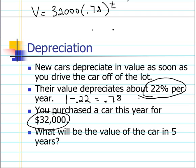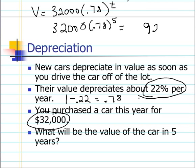If we put 5 in for t and calculate, we get 32,000 times 0.78 to the fifth power, which comes out to $9,238.96. If you plot this out for various years, you'll find that the value of your shiny new car decreases pretty rapidly during the first four or five years. I hope this helps.